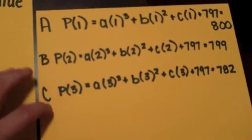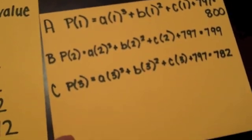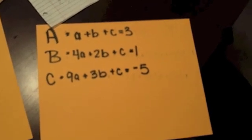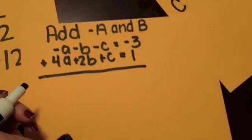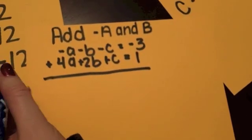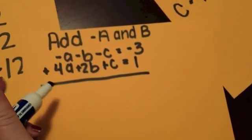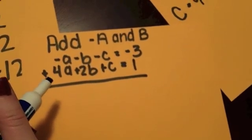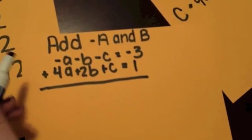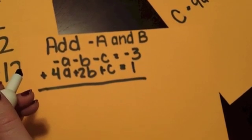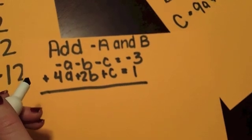So now we are going to simplify those equations A, B, and C. First we are going to try and cancel out the C. In order to do that we are going to add the negative A equation plus B. So that gives us: negative A minus B minus C equals negative 3, plus 4A plus 2B plus C equals 1.